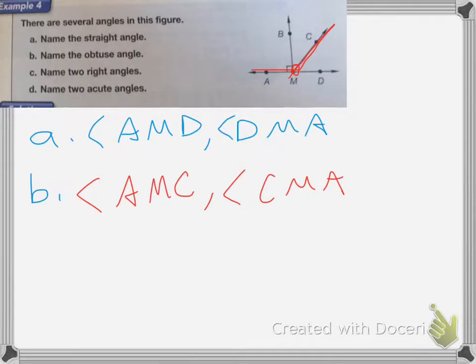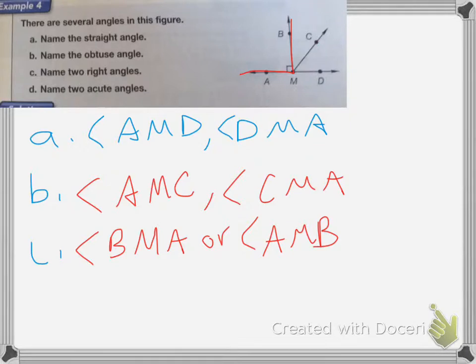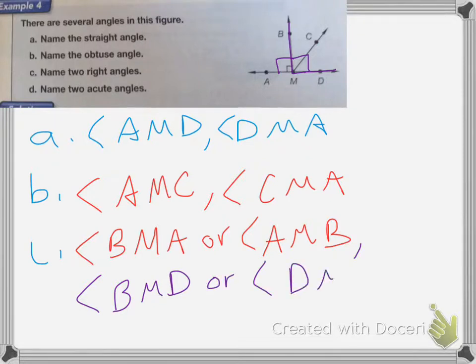Now on C, it's asking to name two right angles. So our first right angle is BMA or angle AMB. And the second right angle, even though it doesn't show it, is going to be on the other side. So it's going to be BMD. Because since this angle, BMA is a right angle, this one next to it has to be a right angle as well. So the other one would be angle BMD or angle DMB.